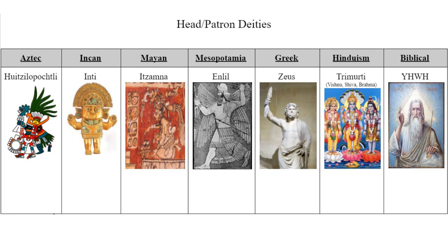Huitzilopochtli, Inti, Enlil, and Zeus are all heads of their pantheon, giving them the highest honor in that regard. Itzamna was a patron of the state; the Trimurti — Vishnu, Shiva, and Brahma — are a creative trinity almost; as well as Yahweh being the creator deity of the Bible.